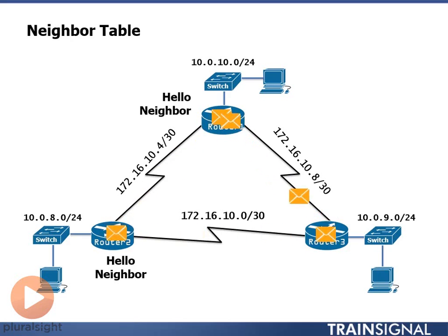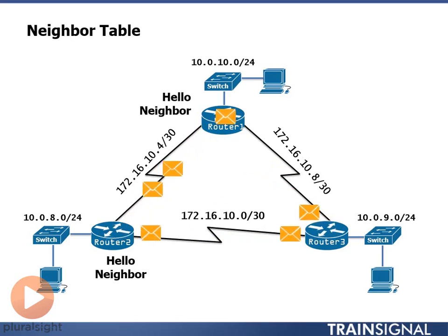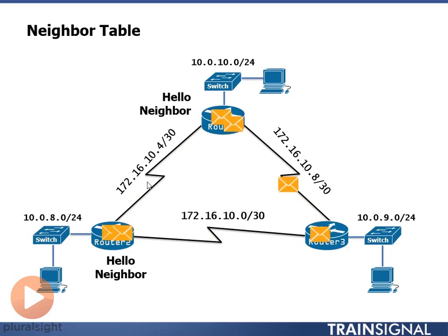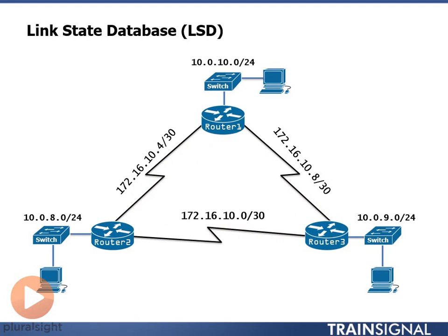As long as a router is receiving hellos from its neighbor and the hellos are fashioned in the appropriate manner, we build a neighbor adjacency or neighbor relationship with that router. So router 2 is neighbors with router 1 and router 3, router 3 is neighbors with router 2 and router 1, and router 1 is neighbors with router 2 and router 3. Once the neighbor table is built, we can send out link state advertisements.